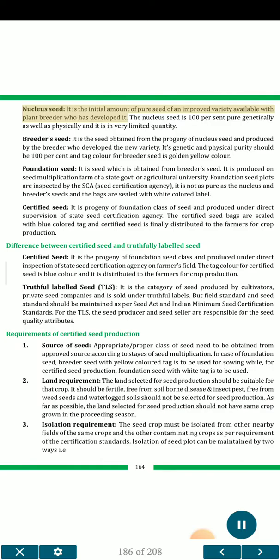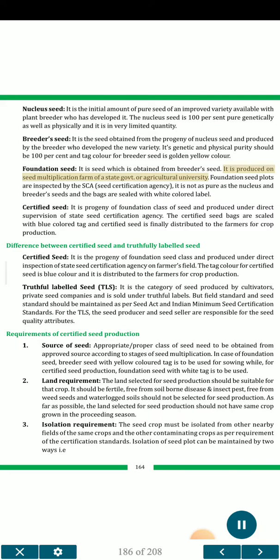Nucleus seed is the initial amount of pure seed of an improved variety available with the plant breeder who developed it. It is 100% pure genetically as well as physically and is in very limited quantity. Breeder seed is obtained from the progeny of nucleus seed and produced by the breeder who developed the new variety; its genetic and physical purity should be 100%, and the tag colour is golden yellow. Foundation seed is obtained from breeder seed and produced on seed multiplication farms of state government or agricultural universities; plots are inspected by the Seed Certification Agency (SCAR), and bags are sealed with a white coloured label. Certified seed is the progeny of foundation class of seed, produced under direct supervision of the state seed certification agency; bags are sealed with a blue coloured tag and distributed to farmers for crop production.